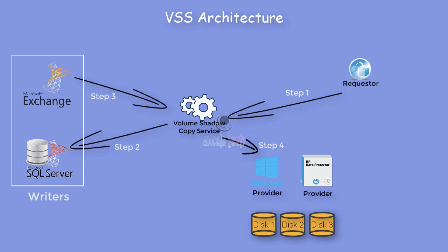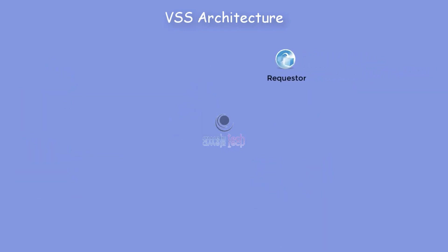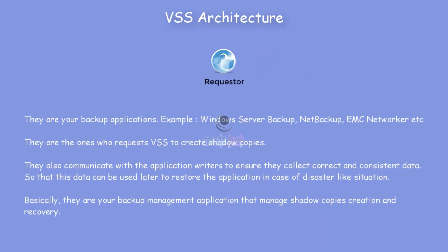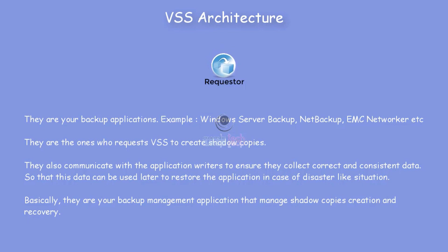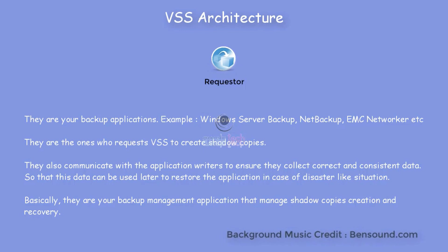The first component is the Requester. Requesters are your backup applications — like Windows Server Backup, NetBackup, EMC NetWorker, etc. They are the ones who request VSS to create shadow copies. They also communicate with the application Writers to ensure correct and consistent data is collected, so that data can be used later to restore the application in a disaster scenario. Essentially, they are the backup management layer that manages shadow copy creation and recovery.